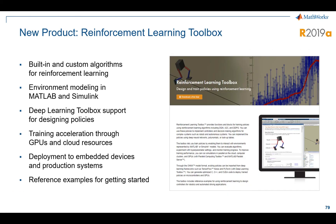A brand new toolbox in 2019A is the Reinforcement Learning Toolbox. This might be particularly interesting to colleagues doing controls work. It's built around the idea of leveraging deep learning to design policies or algorithms to teach machines how to do things — in this case, for example, a robot walking in a straight line. There are great examples in the toolbox to help you get started. It's brand new but important in a very up-and-coming area.